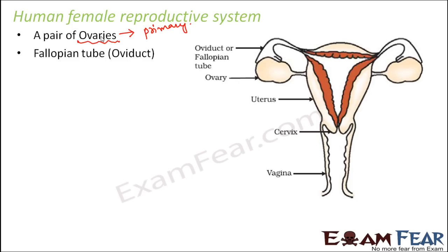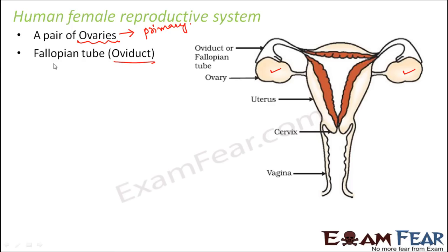There is a fallopian tube or oviduct. If you see, these are the two ovaries and this is the fallopian duct — a tube-like structure which is connected on one end to the ovary, and it is present on both sides. So it is called oviduct and fallopian tube.